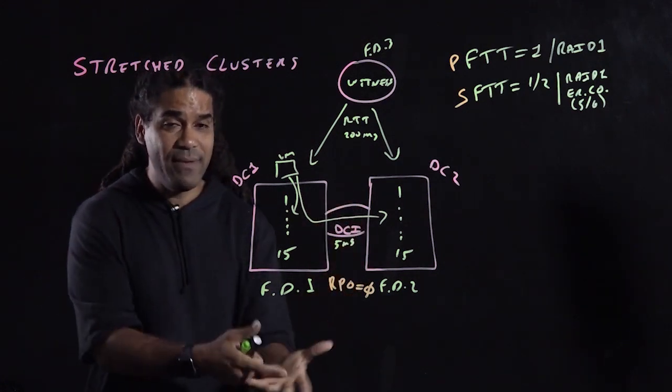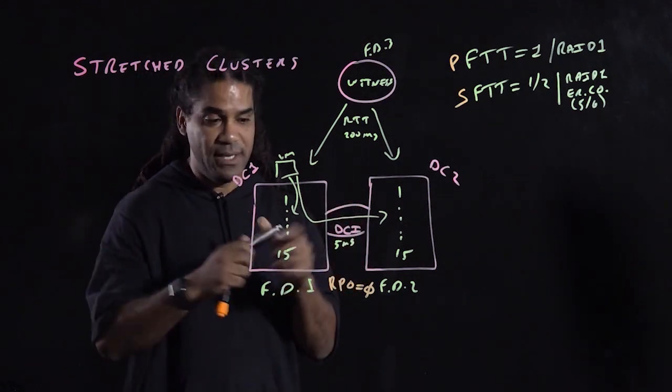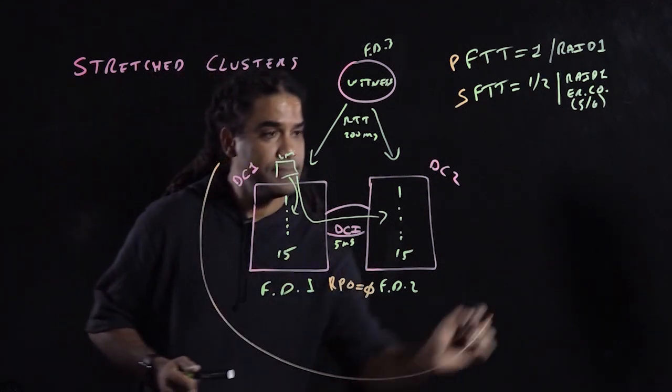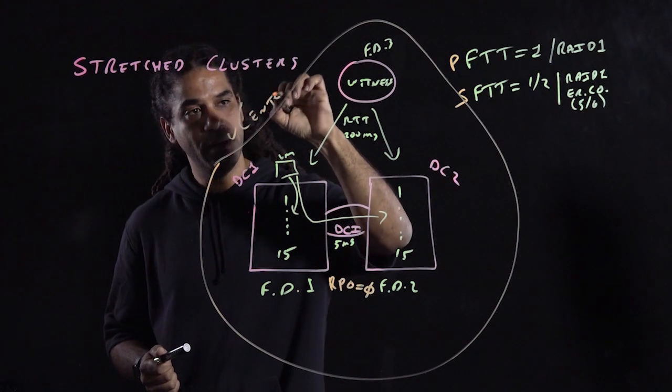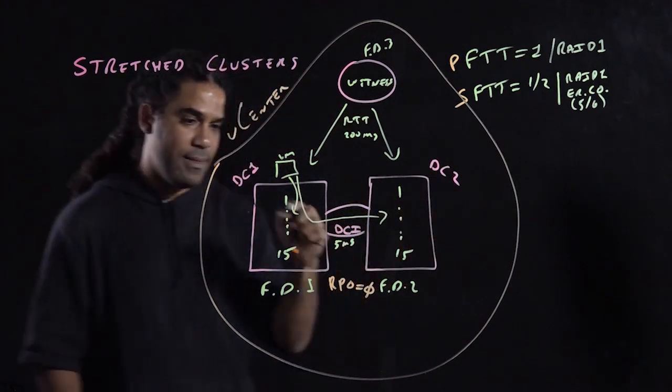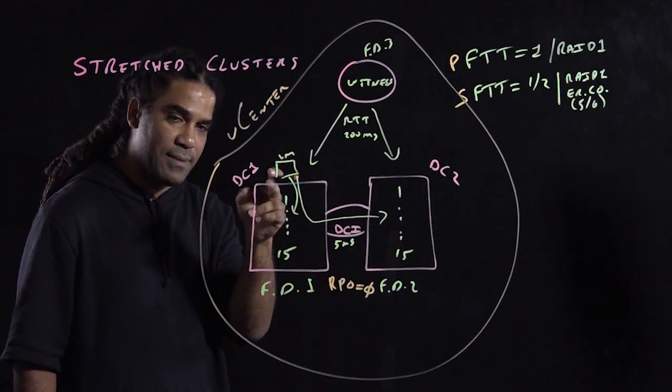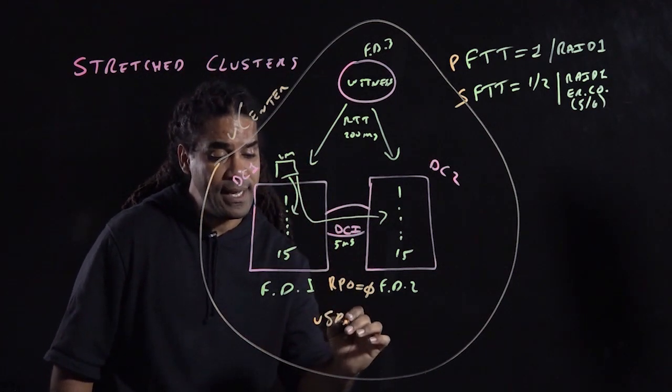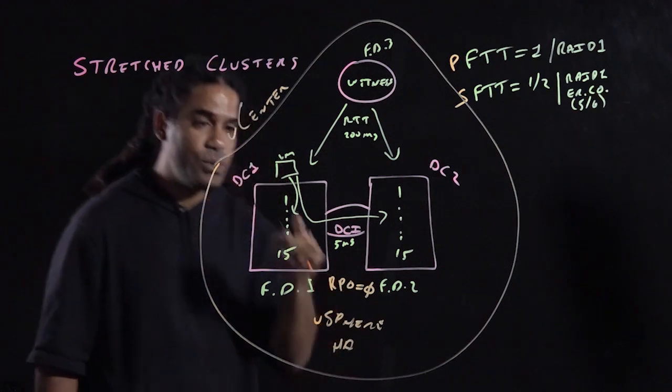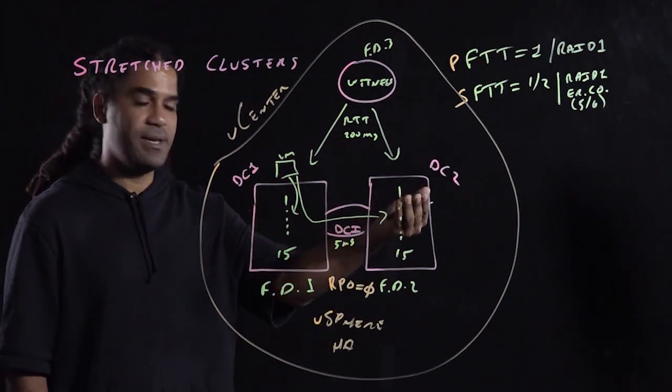And now that we have an RPO of zero, and one thing I should mention, kind of digressing a bit, that all of this is under the same vCenter. So finally now, what you have is that if something happens to that VM or this data center, you can enable vSphere HA to restore that VM over here.